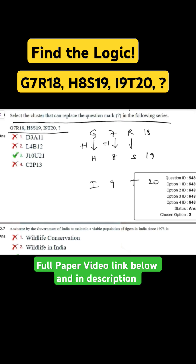R to S is plus 1, and 18 to 19 is plus 1. Similarly, H to I is plus 1, 8 to 9 is plus 1, S to T is plus 1, and 19 to 20 is plus 1.